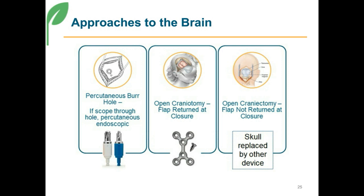The approaches to the brain are three main ones that are listed in all the tables. They are maybe not so confusing when you take them one at a time and understand what the doctor is trying to tell you with their documentation. So let's go from left to right.